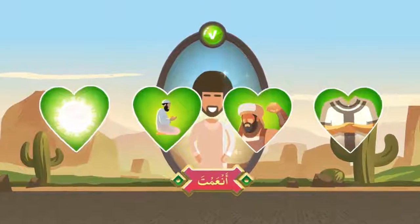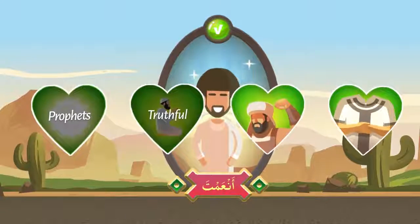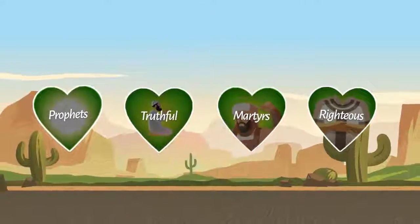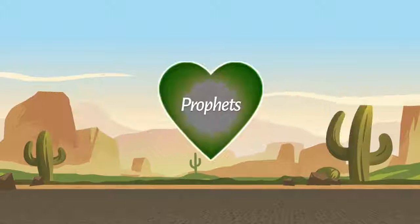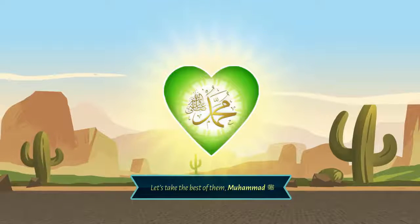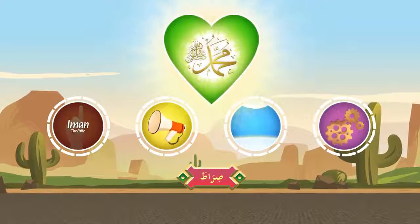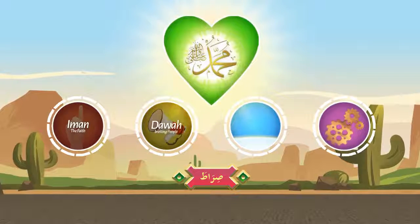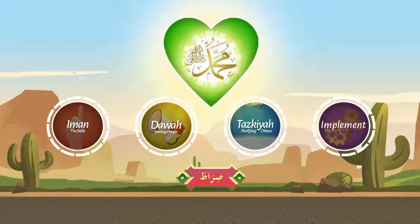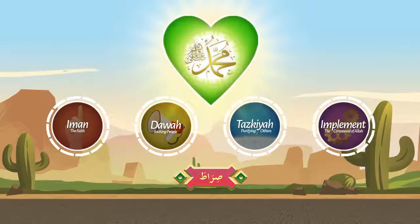Who are the people Allah has bestowed favors on them? They are prophets, the truthful, martyrs, and righteous people. Let us take the top among them — the prophets — and take the best of them, Muhammad sallallahu alayhi wa sallam. What was his path? His path was iman and amal, giving da'wah, doing tazkiyah — which is purifying others — and implementing the commands of Allah.